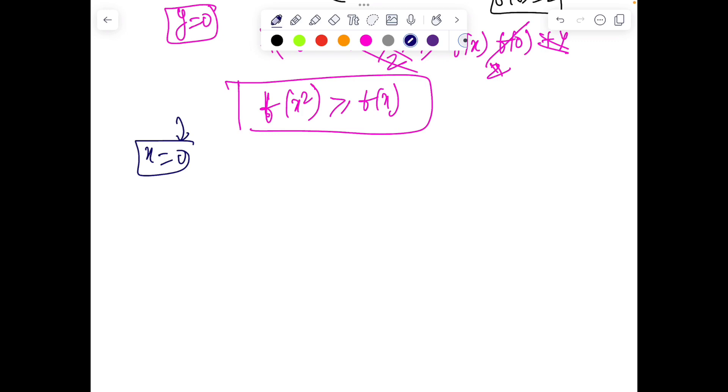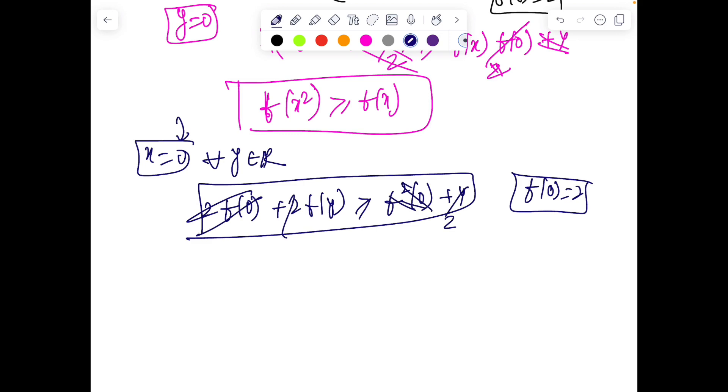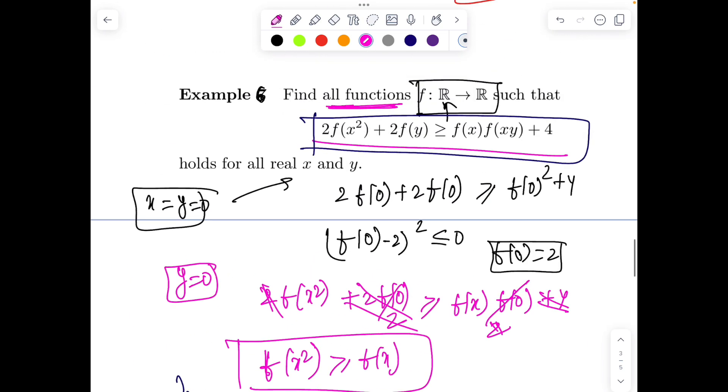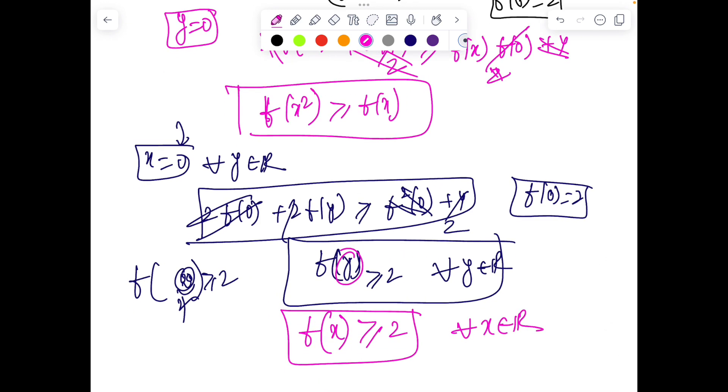Put x = 0 for all real y. Then 2f(0)² + 2f(y)² = f(0) + 4f(y). Since f(0) = 2, we get 8 + 2f(y)² = 2 + 4f(y), giving f(y)² - 2f(y) + 3 = 0. Wait, this doesn't work. Let me reconsider. From the condition, f(y) ≥ 2 for any input.